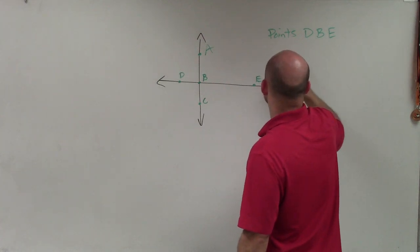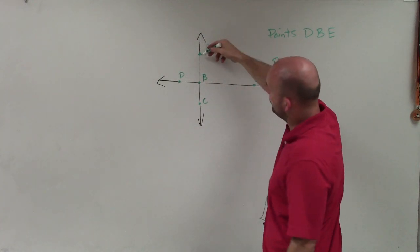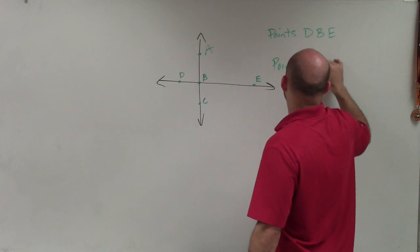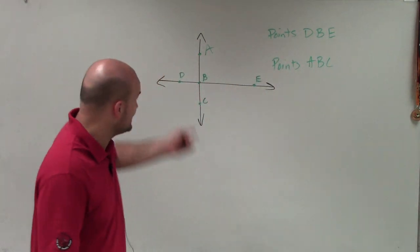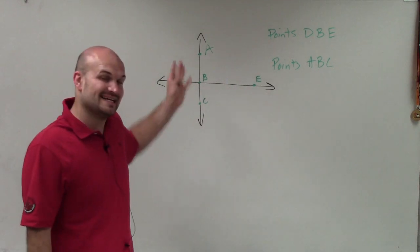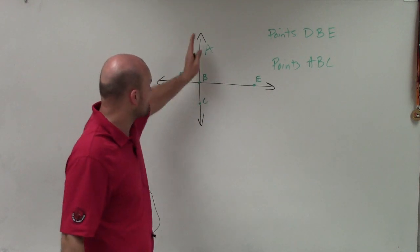As well, we could look at the other line and say points A, B, and C are also collinear. Now, the only point that is collinear for both lines is point B because it's at the intersection and is on both lines.